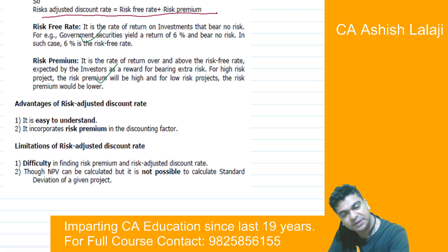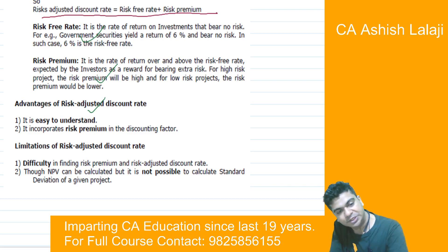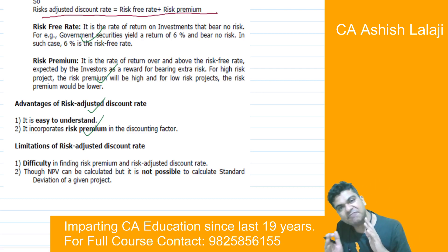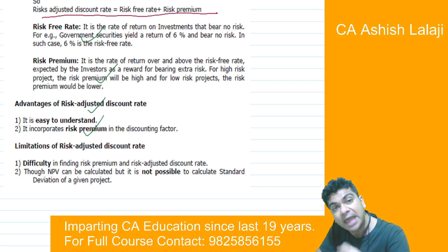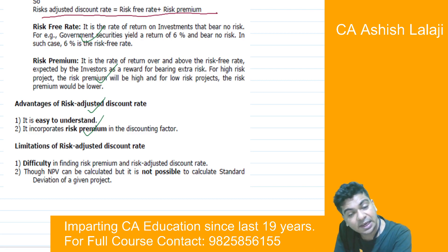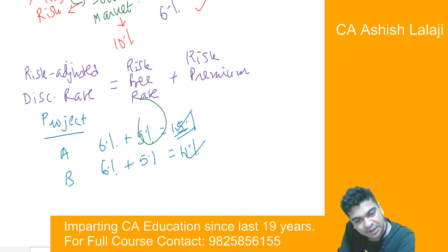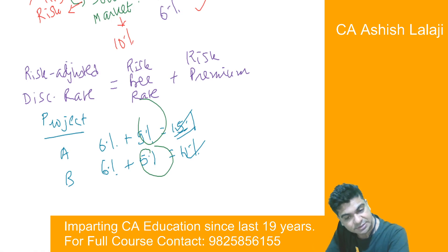The advantages of this technique are that it is easy to understand and easy to explain. It incorporates the risk premium into the discounting factor, so I am finally able to work out how much return I should demand from a higher-risk project. The limitation is the risk premium — how will I decide it? We were saying 9% or 5%, but from where did you get these figures? How shall we determine them? That is the issue we are going to face.